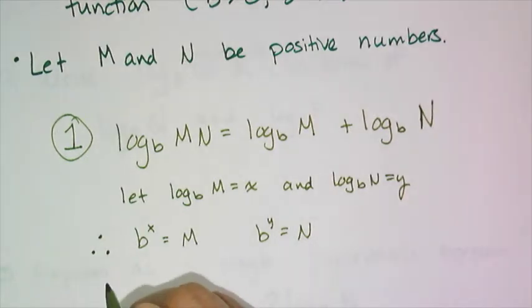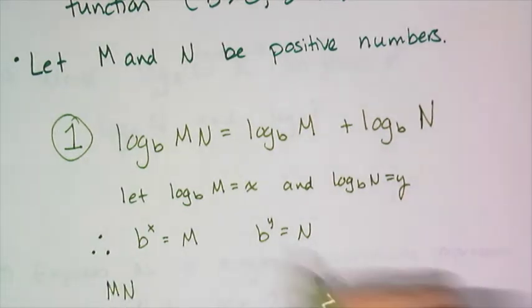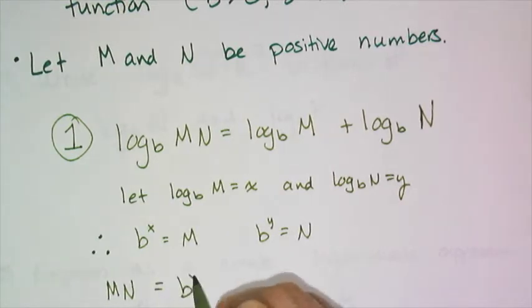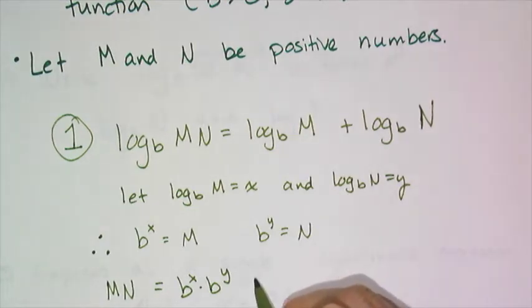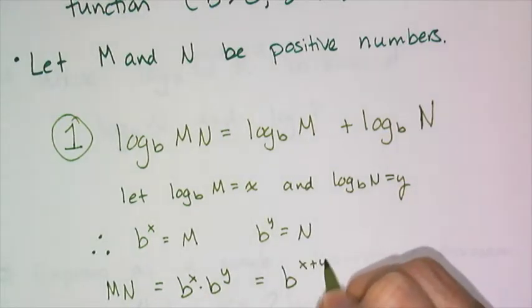Now I can multiply m times n and I get b to the x times b to the y because it's really the product rule. And the product rule says that if I multiply the same base, all I have to do is add the exponents.